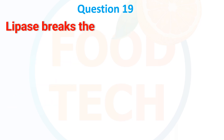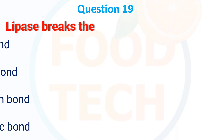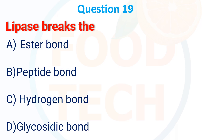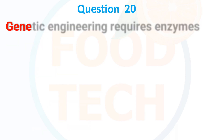Lipases break the: A. ester bond, B. peptide bond, C. hydrogen bond, D. glycosidic bond. The answer is A, ester bond.